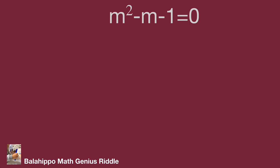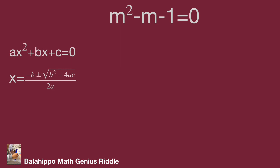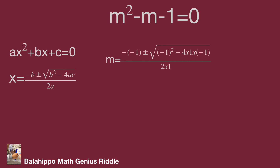Then find the roots of m. Using the quadratic formula: for ax² + bx + c = 0, x equals minus b plus or minus square root of b squared minus 4ac, all over 2a. Applying this to m squared minus m minus 1 equals 0, we get m equals 1 plus or minus square root of 5, all over 2.